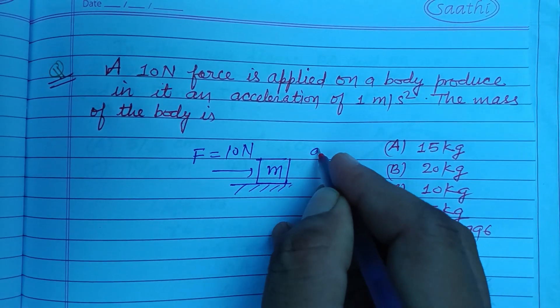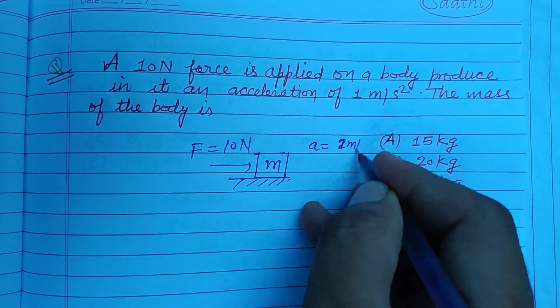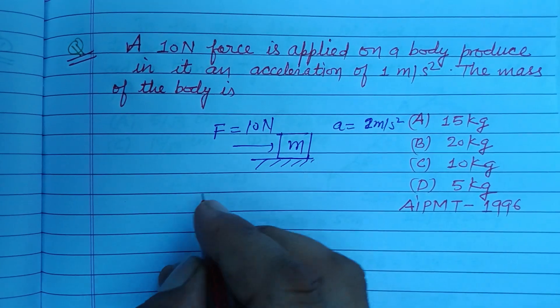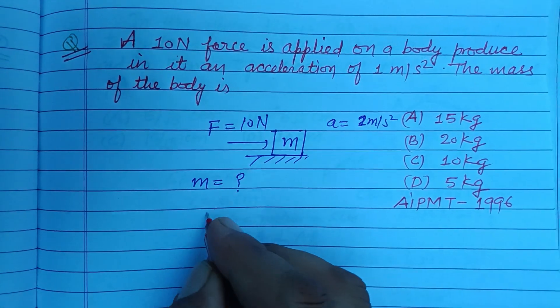We want to find out the acceleration generated in the body, which is given to us as 1 meter per second squared. Here mass is required, so we need to find the mass using Newton's second law.